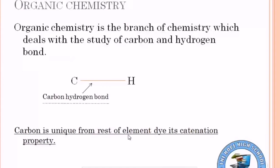Organic chemistry، جسے ہم نامیاتی chemistry بھی کہتے ہیں، chemistry کی وہ branch ہے جس میں ہم کاربن اور ہائیڈروجن bond کی study کرتے ہیں۔ Organic chemistry is the branch of chemistry which deals with the study of carbon and hydrogen bonds. Organic chemistry میں ہم صرف انہی compounds کی study کرتے ہیں جس میں کاربن directly ہائیڈروجن کے ساتھ bonded ہوتا ہے۔